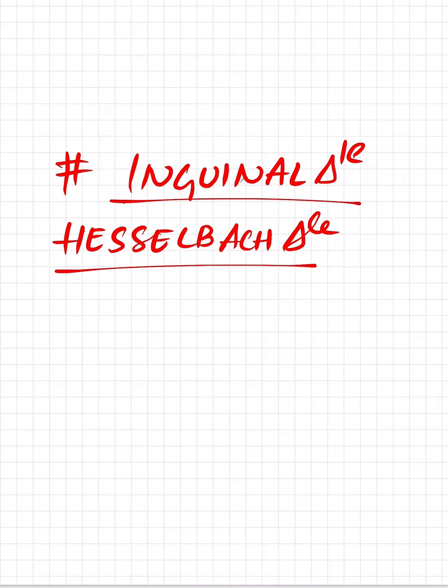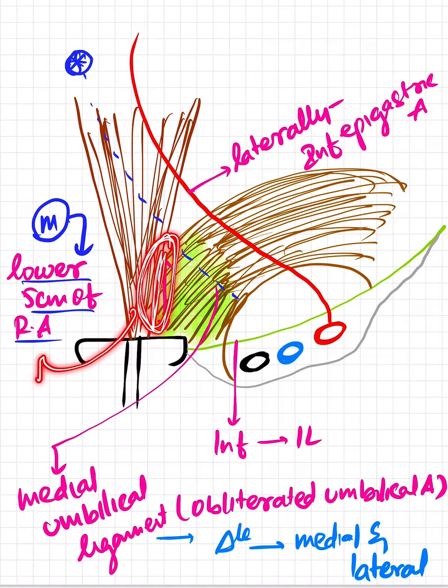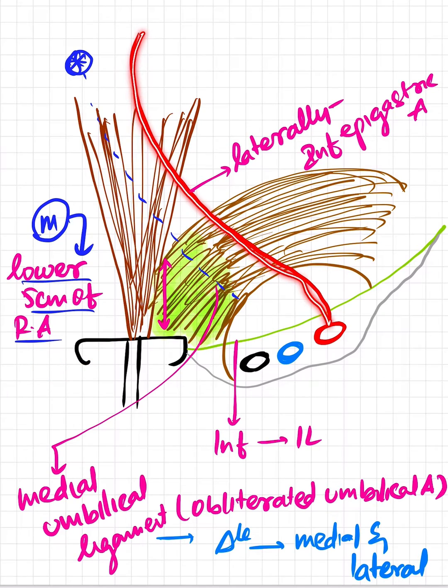Let's see the boundaries of this inguinal triangle. The medial boundary is formed by the lower 5 centimeters of the rectus abdominis muscle. Laterally, the inferior epigastric artery forms the lateral boundary.